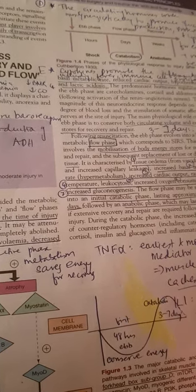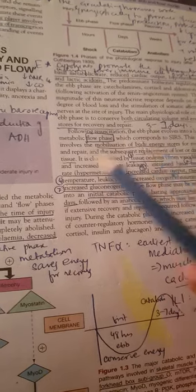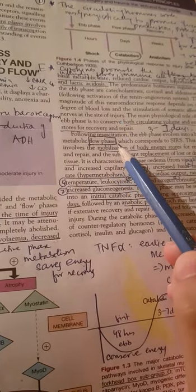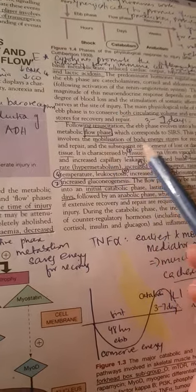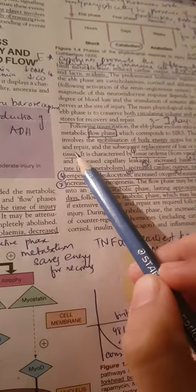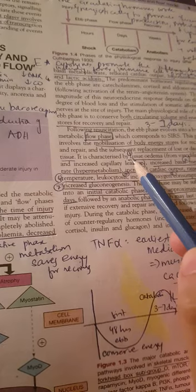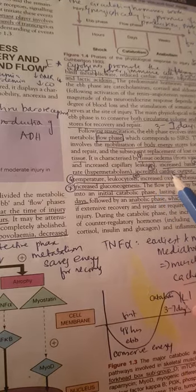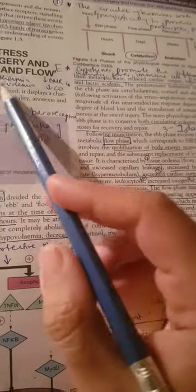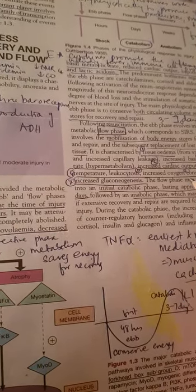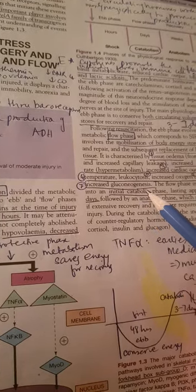Then we come to the flow phase. In the flow phase, there is mobilization of body energy stores for recovery and repair, and it also replaces lost or damaged tissue. It's characterized by tissue edema, increased BMR, increased cardiac output, increased body temperature - the opposite of those four things - along with increased oxygen consumption and increased gluconeogenesis.